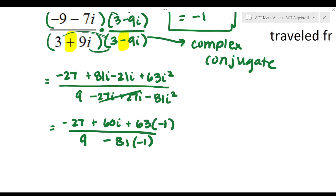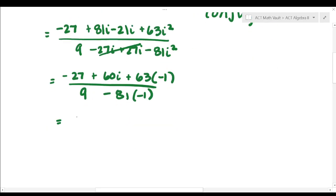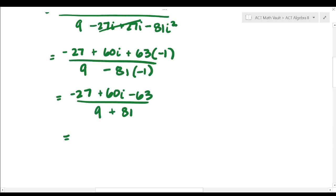Negative 27 plus 60i and then minus 63 all over. I need to be careful with my negatives nine. And then this will be plus positive 81. Okay. So we're going to keep going. Okay. So now I can do the negative 27 minus 63, that is negative 90 plus 60i over, and then nine plus 81 is 90.